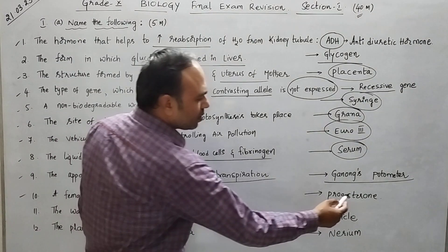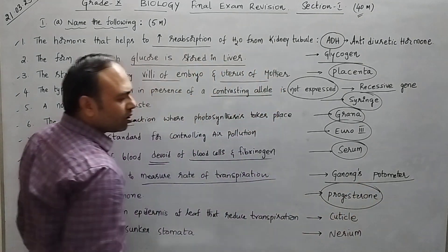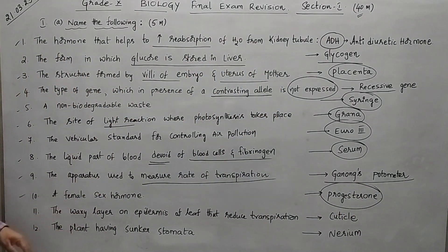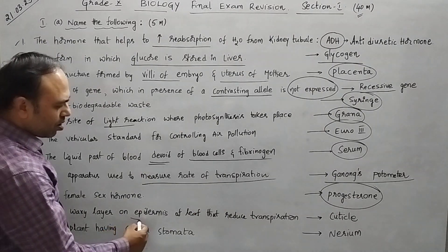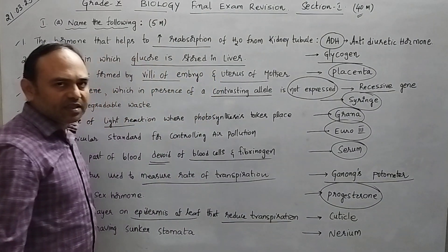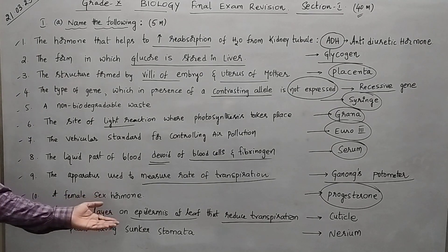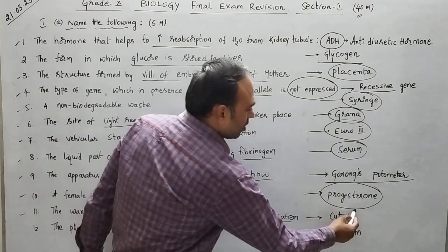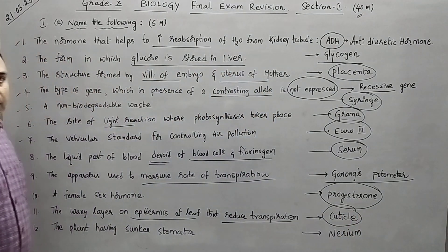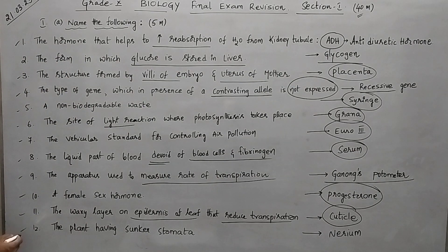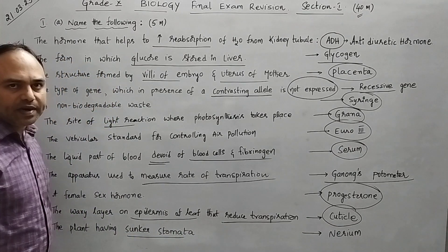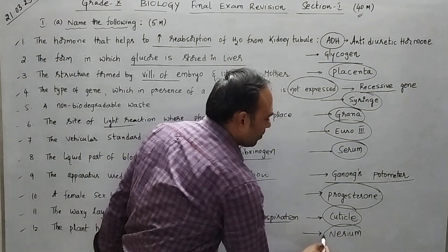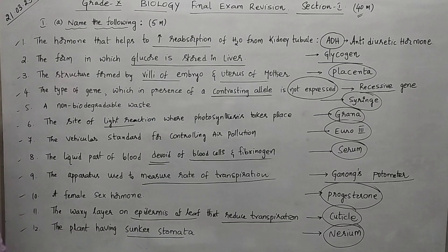Tenth: a female sex hormone — that is progesterone. You know that the male hormone is testosterone. Eleventh: the waxy layer on the epidermis of the leaf which helps to reduce transpiration — that is the cuticle. Twelfth: the plant having sunken stomata — that is Nerium. All these are direct questions; make a note of this.